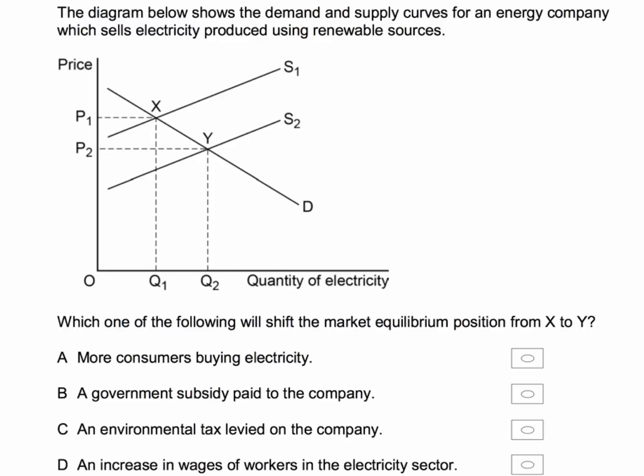The equilibrium involves an outward shift of supply from S1 to S2, moving down the demand curve. So as the price falls from P1 to P2, there is an expansion of quantity demanded. The implicit idea behind this question is how best can we encourage an increase in consumption of renewable energy?